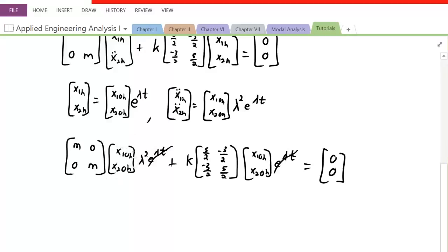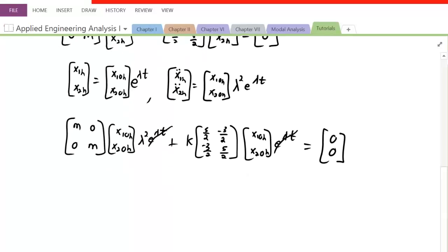Alright, so if you look here, we have X1 not H, X1 not H. So we have the same variable, and we can actually add these two matrices together. So I want to multiply both matrices by the constants. In this case we have lambda squared outside, and we have K outside. If we multiply those in, it makes it a little bit simpler to solve for. So we have lambda squared M, 0, 0, lambda squared M. All I did was multiply the lambda squared into that matrix.